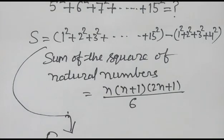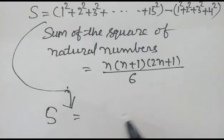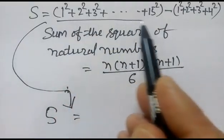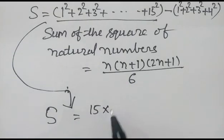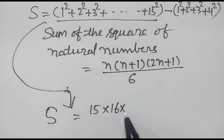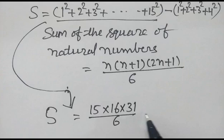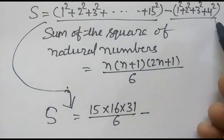So now the sum will be, using this formula: 15 times 16 times 31 over 6, minus the sum of this series, 4 times 5 times 9 over 6.